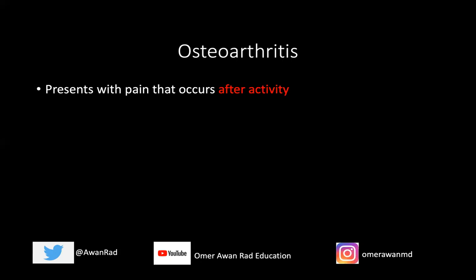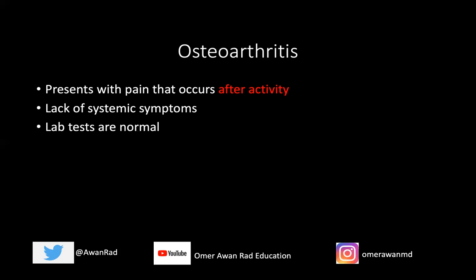In degenerative arthritis like osteoarthritis, the pain is exacerbated with activity and after activity. There are no systemic symptoms involved — no fever, malaise, or anemia. There's no systemic involvement in osteoarthritis. All the lab tests are normal, so all those inflammatory markers like ESR, white blood cell count — all those things are totally normal in osteoarthritis.